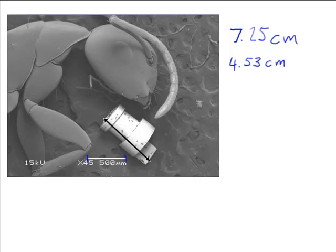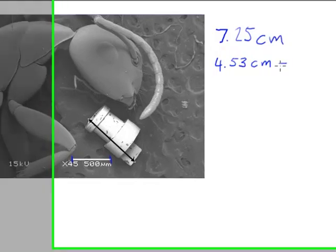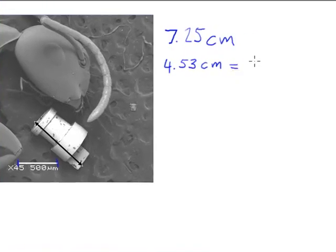According to the notation here, it says that this scale bar actually represents a length of 500 microns. So this results in an equivalent statement: 4.53 cm is equal to 500 microns.